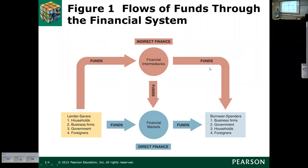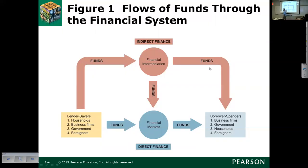Notice who's number two on the borrower side — government. Worldwide, but especially in the United States, government has tended to be a borrower of funds because they don't collect enough in taxes to pay for all of the spending they're doing year by year.